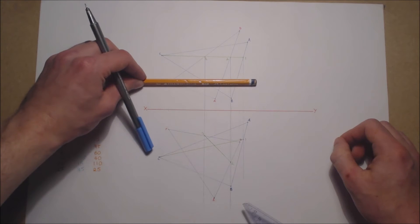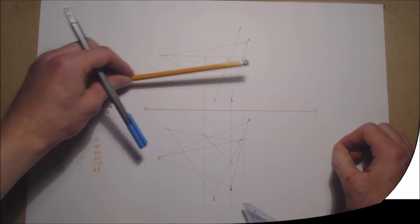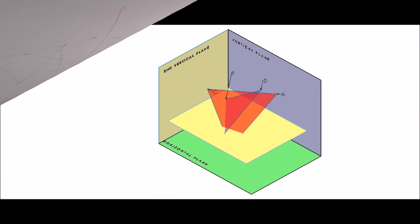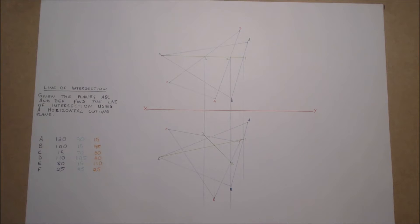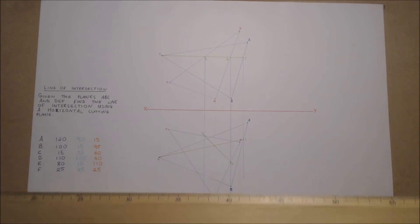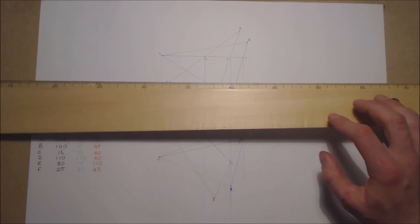To draw a line we must have at least two points, so we will now use a second horizontal cutting plane from point F and find the points in elevation and in plan.